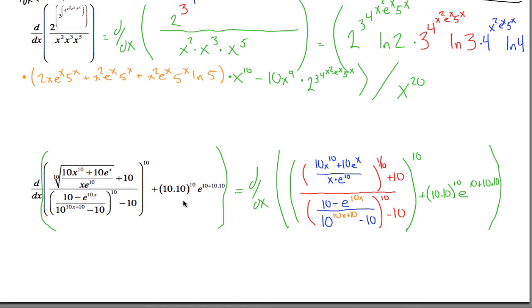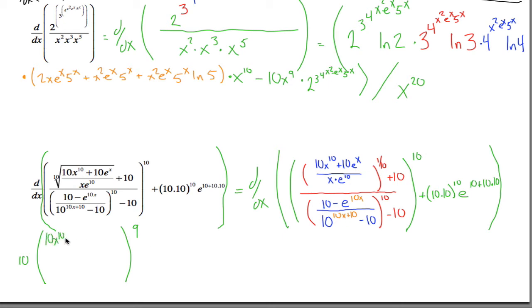One more to go — the tens problem, with tens written all over the place. The first thing to notice is this is the derivative of a sum. Take the derivative of the first thing and add the derivative of the second thing. The good news is that the second thing, the stuff in green, is just a constant — there are no x's in it. The derivative of a constant is 0. So I just have to find the derivative of the first term. The outermost function is something raised to the tenth power. Using the power rule, bring that 10 down in front and copy all this stuff raised to the ninth power.